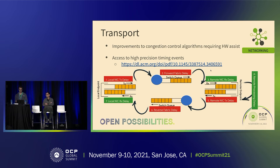Swift also calculates congestion of the end host — corresponding to how loaded the server is — by measuring the delay from when a request arrives in the NIC's receive queues to when it's actually processed by the server. The longer that time, the longer the application queue and the more loaded the server. For fabric delay we use NIC time on both ends synchronized via PTP. For the host case there's an additional challenge: the NIC and the host have separate clocks, so we also need to synchronize the NIC clock to the host clock.